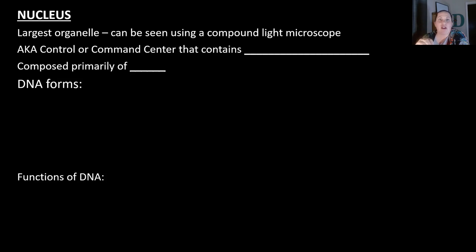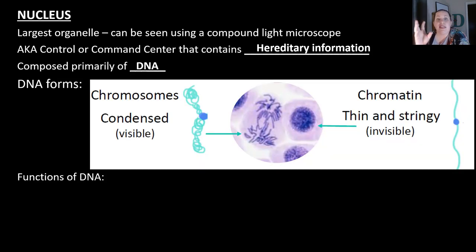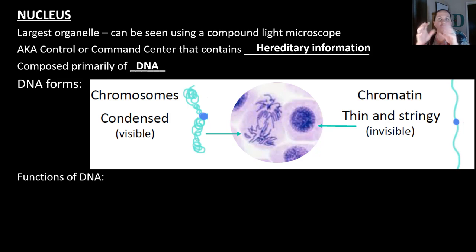Let's break down each of these structures in more detail, starting with the nucleus. The nucleus is the largest organelle found in the cell and can be seen using a compound light microscope — you'll see a dark circle normally inside the cell. The nucleus is also known as the control or command center because it contains the DNA, the hereditary information. This is composed of DNA, a nucleic acid, and DNA does form chromosomes. When condensed, they're visible and wound up; when not condensed, they're very thin and stringy, which just looks like a dark blob. The function of the DNA is to store genetic information and control the cell's activities.